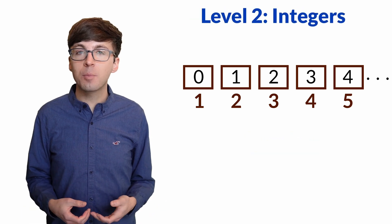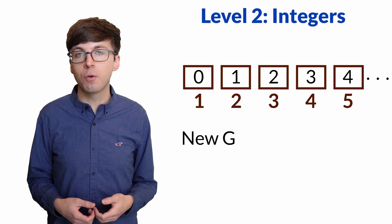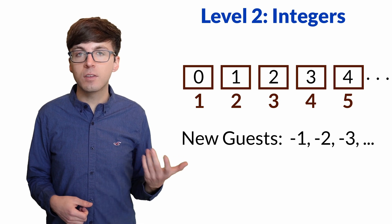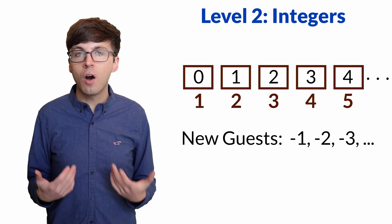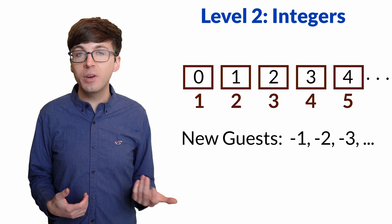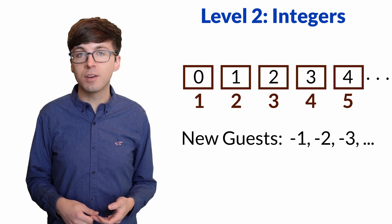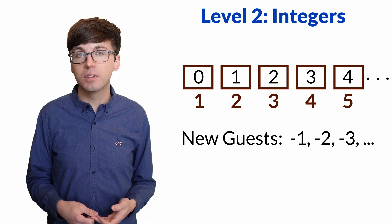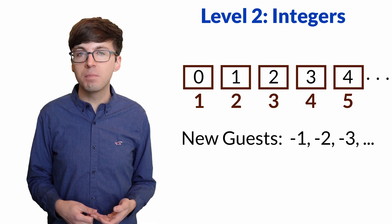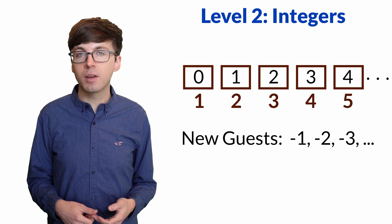For level two, let's see what happens when all the integers show up to the hotel. Guests 0, 1, 2, and so on all have rooms, but now we need rooms for all of the negative integers. There are infinitely many guests who now want rooms. Can we accommodate all of them?